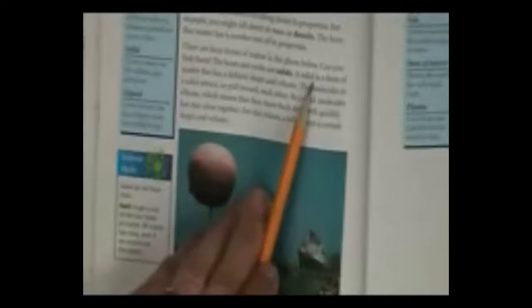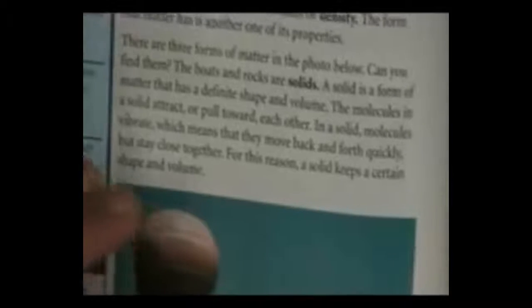Can you find them? The boats and the rocks are solids. A solid is a form of matter that has a definite shape and volume. The molecules in a solid attract or pull toward each other. In a solid, molecules vibrate, which means that they move back and forth very quickly. But they stay close together. For this reason, a solid keeps a certain shape and volume.